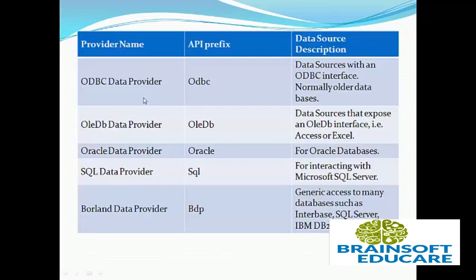These are the various provider names and which API prefix is used for each particular provider. There are various providers like ODBC, OLEDB, Oracle data provider, SQL data provider, and Borland data provider, and these are the various prefixes used to access the APIs for each provider.